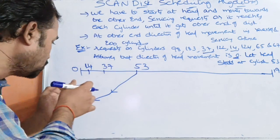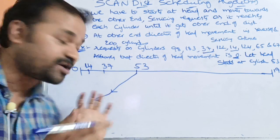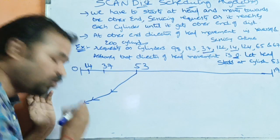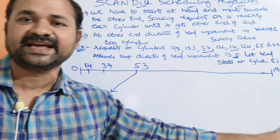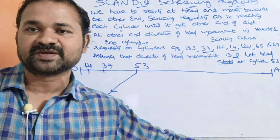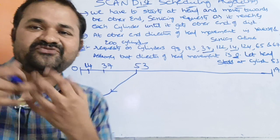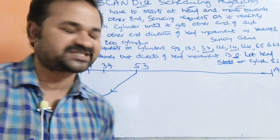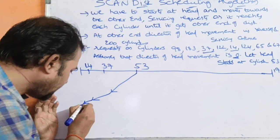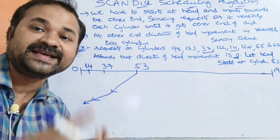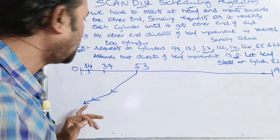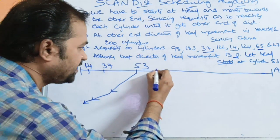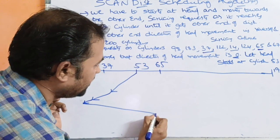We proceed toward the 0th (start) end. After reaching 0, the direction of head movement is reversed and we now traverse toward the final end. After reversing from 0, the next request encountered going toward the final end is cylinder 65.